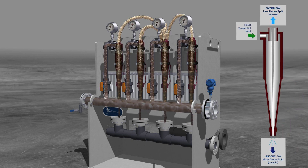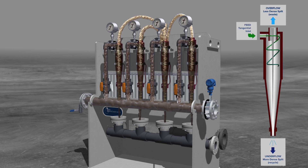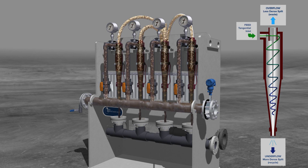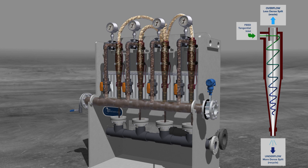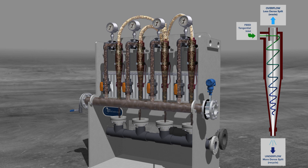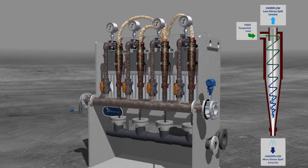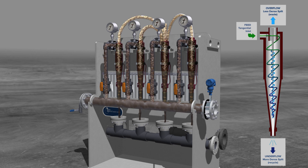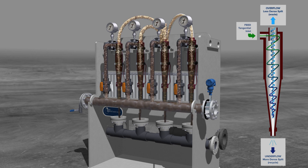WAS enters the hydrocyclone tangentially, forcing the denser particles toward the outer perimeter of the cyclone and down through the underflow. The lighter solids remain in the inner vortex and are pushed upwards through the overflow.